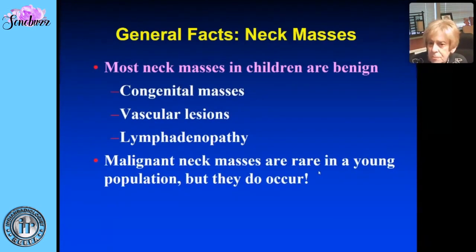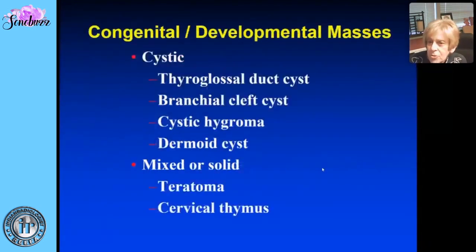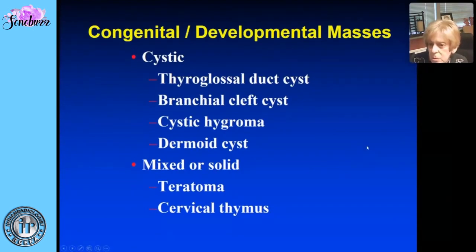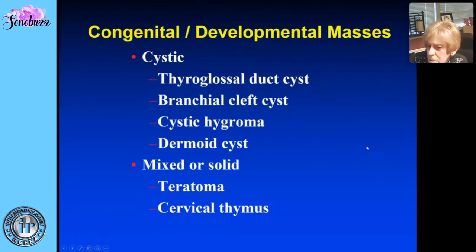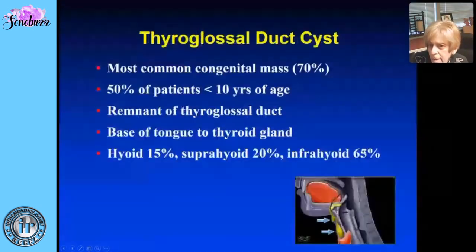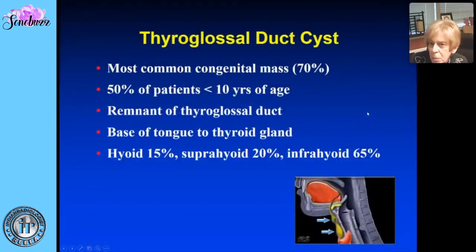Starting with congenital or developmental masses, we'll divide them into those that have a cystic appearance and those that have a mixed or solid appearance. Starting with the cystic lesions, we'll begin with the thyroglossal duct cyst.